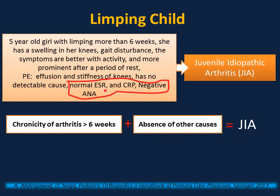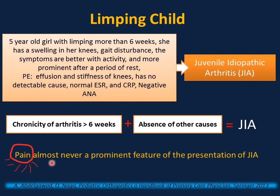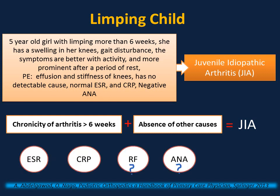Very important: laboratory studies have little utility in making the diagnosis of JIA, except to exclude other causes of joint swelling. It is critical to know that pain is almost never a prominent feature of JIA — compare that to acute rheumatic fever, where the joint is very painful with migratory arthritis. ESR and CRP are usually normal in JIA, especially the oligoarticular type, though they can be elevated in the systemic type. RF and ANA have no diagnostic value in making the diagnosis of JIA. ANA can be helpful in predicting the risk of uveitis, but it is important to know it can be positive in 35% of healthy children.